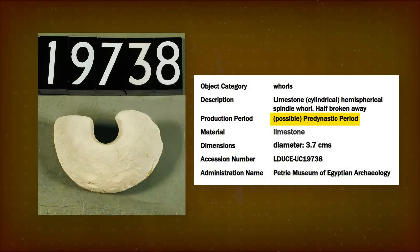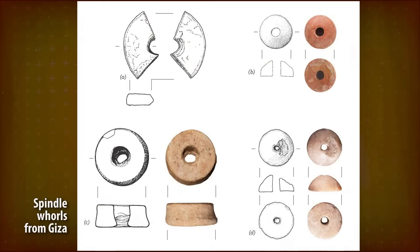By the way, spindle whorls may date back to pre-dynastic times. This is yet another evidence that the idea of a disk spinning on an axle was known very early in Egypt, even if the wheel for transport was not used.